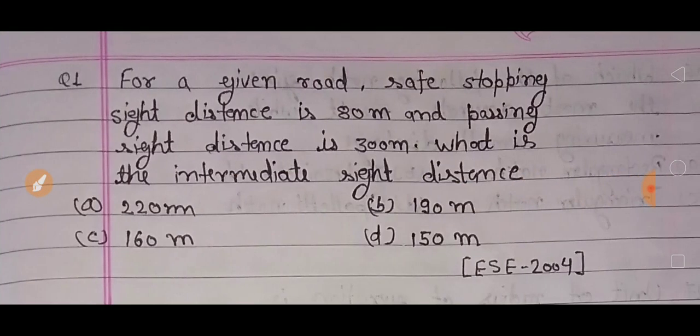Our first question: for a given road, safe stopping side distance is 80 meter and passing side distance is 300 meter. What is the intermediate side distance?